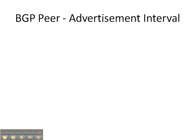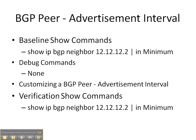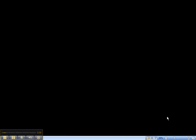In this video cheat sheet we're going to be configuring the advertisement interval for a BGP peer. We'll start with a baseline show command — show IP BGP neighbor — looking for the minimum interval that's set. There are no debug commands with this video cheat sheet. We'll then customize the BGP peer, change the advertisement interval on router 1 to neighbor router 2, and then verify with the show IP BGP neighbor command to see if the output has changed.